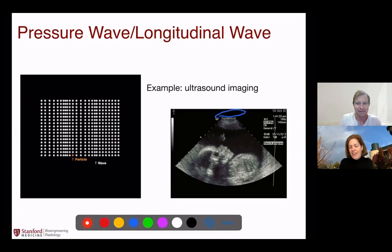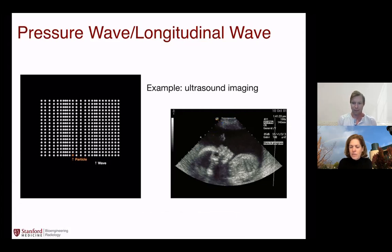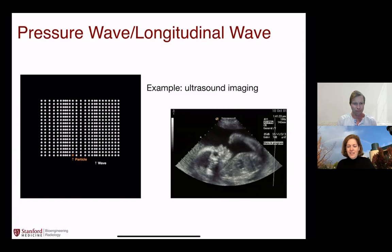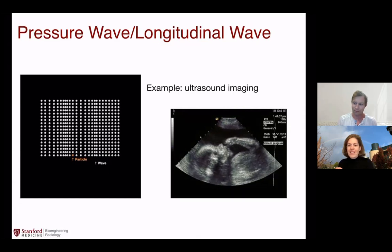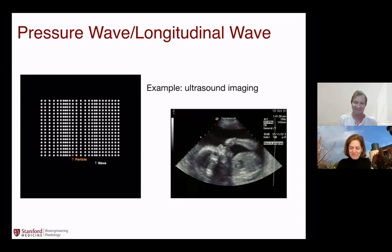Another good example is ultrasound imaging. A transducer sends out a pressure wave into tissue, reflections of that pressure wave come back and are picked up by the transducer again, allowing you to get a picture inside the body. For example, here we have a fetus, and there's this interesting concept of continuity of personality — if they're a thumb sucker when they come out, they're a thumb sucker on the inside too.